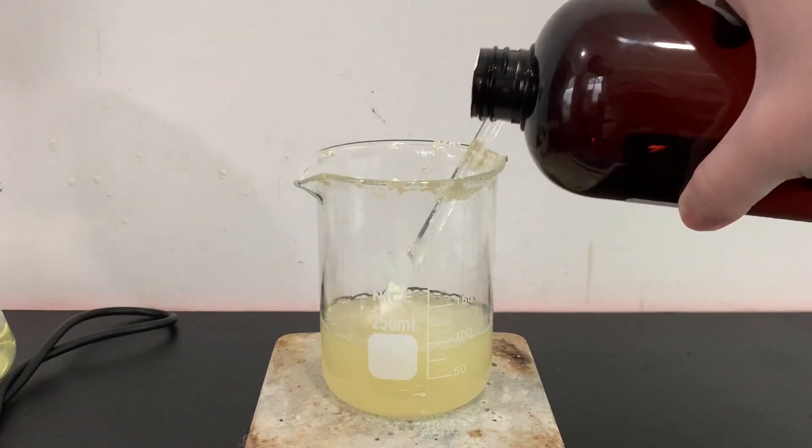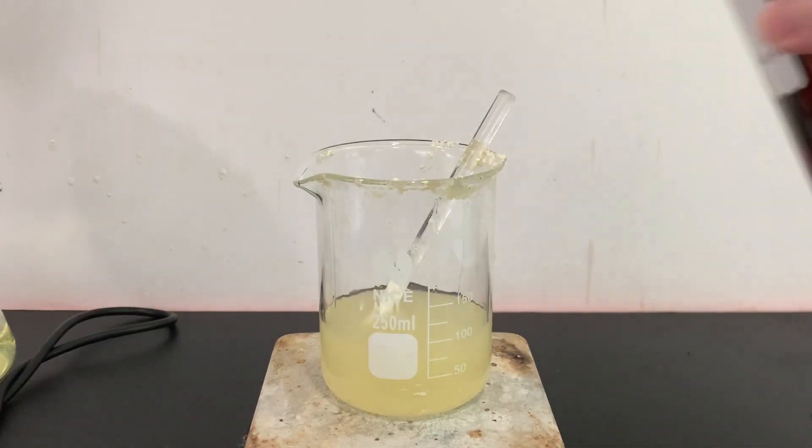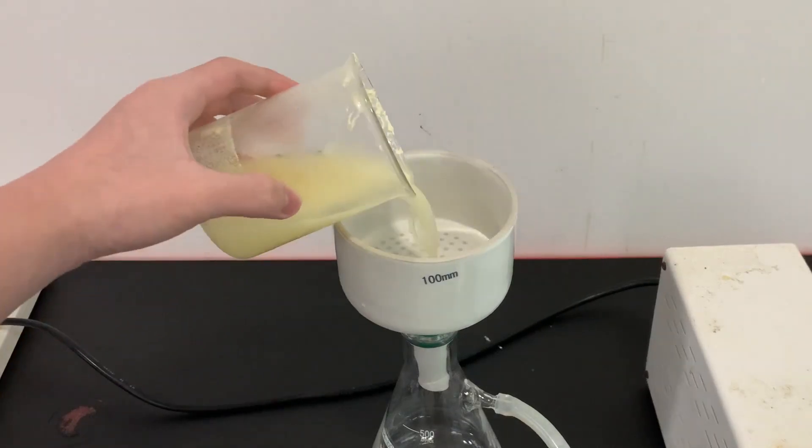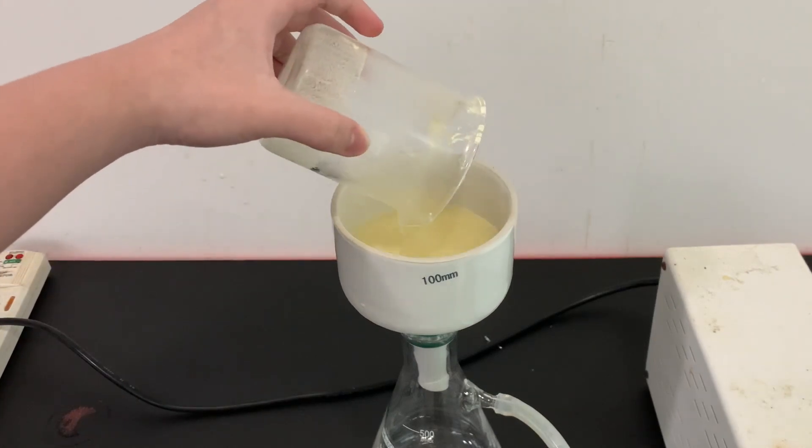To purify the luminol, I did a recrystallization by dissolving the crude in boiling ethanol. The purified luminol is again separated by vacuum filtration.